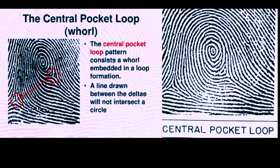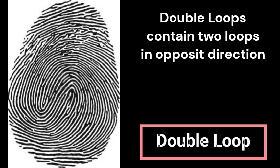A central pocket loop is a whorl but with ridges moving in one direction. It can be either radial or ulnar. A double loop contains two loops in opposite directions, as you can see on the screen. A fingerprint pattern which does not resemble any of these patterns is called an accidental. After watching this video, we hope that you will be able to identify your fingerprints.